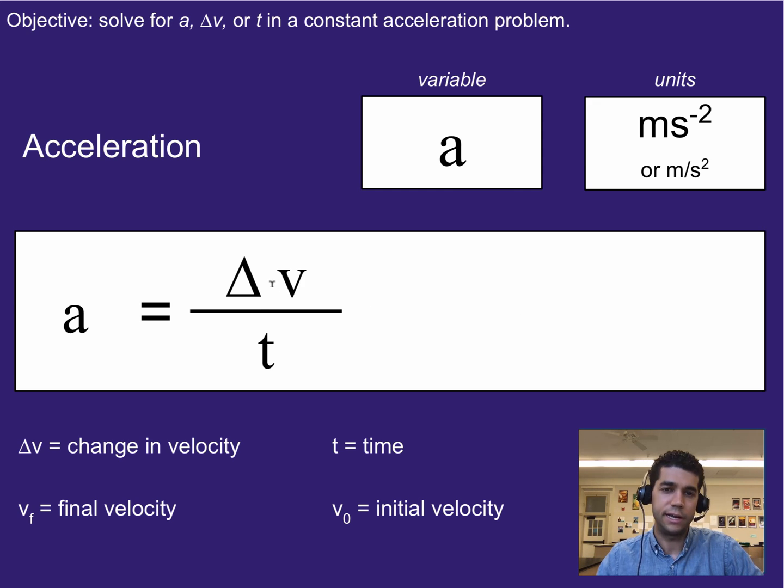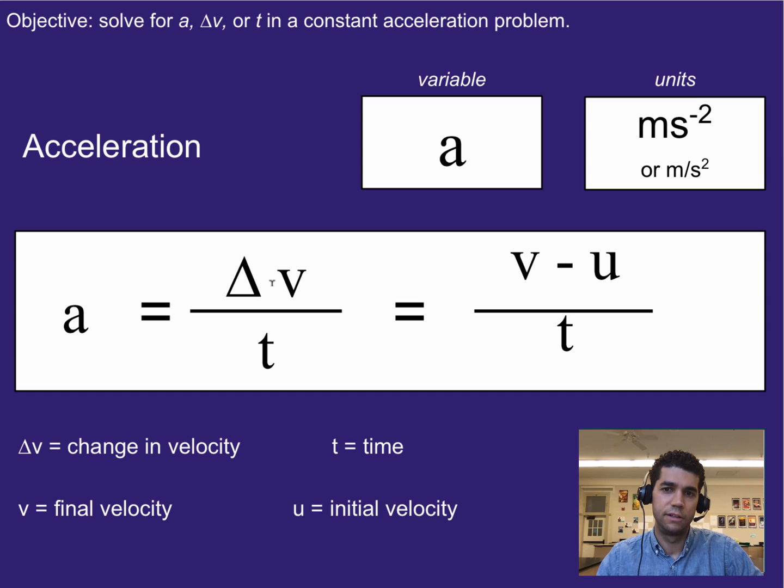Now if we're trying to calculate our change in velocity, there's one way that we do it, but it's often written in two different formats. First, our first format is we take our final velocity, v, minus our initial velocity, u. Remember that in this class we use v for your final velocity, and then anytime we have an initial velocity we'll use u to represent that. So this is just final minus initial over time. That gives us the change in velocity, and then we divide it by time.